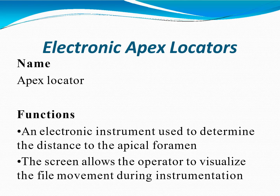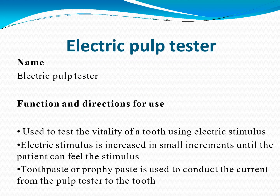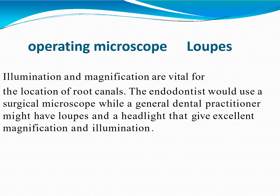The apex locator is an electronic instrument used to determine the distance to the apical foramen; the screen allows the operator to visualize file movement during instrumentation. The electric pulp tester is used to test the vitality of a tooth using electric stimulus, which is increased in small increments until the patient feels it; toothpaste or prophy paste is used to conduct the current from the tester to the tooth. Loops and an operating microscope provide illumination and magnification vital for locating root canals; an endodontist would use a surgical microscope while a general dental practitioner might use loops with a headlight.